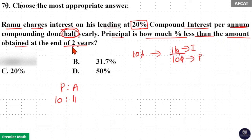Now duration is 2 years. That means there are 4 six months in 2 years. So 10 raise to 4 parts and 11 raise to 4 parts are the principle and amount for 2 years.